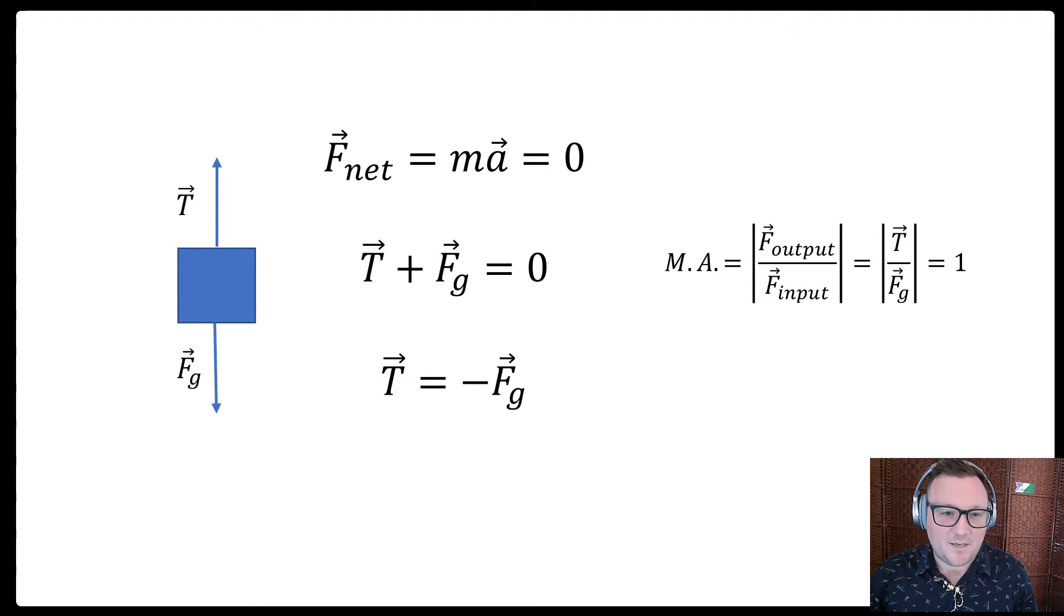We can do a mechanical advantage calculation. Let's call the force that the mass experiences the output force, and the force that we exert the input force. If we divide the output force by the input force, we get 1, because they are equal. Hence, this is a situation with a mechanical advantage of 1, or no mechanical advantage. Obviously, we shouldn't expect a mechanical advantage if we don't even have any mechanics.